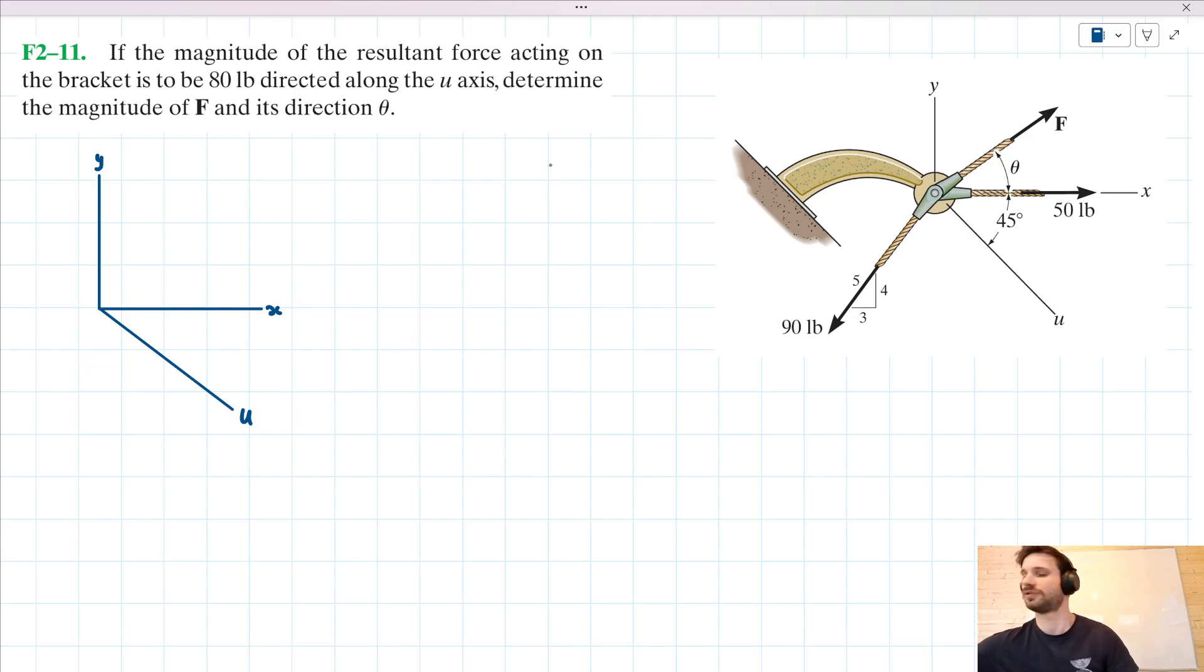Hello and welcome to this video tutorial for R.C. Hibbler Engineering Mechanics Statics. We have this problem from chapter 2 that says, if the magnitude of the resultant force acting on the bracket is to be 80 pounds directed along the u-axis, determine the magnitude of F and its direction theta.